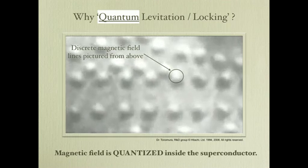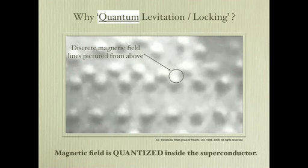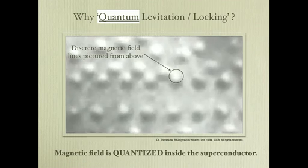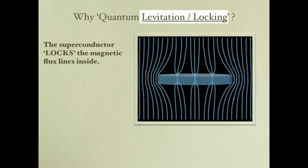This is why we call this effect quantum levitation and quantum locking. When we put a superconductor inside a magnetic field, strands of magnetic field are left inside. The superconductor doesn't like them moving around because their movement dissipates energy, which breaks the superconductivity state.